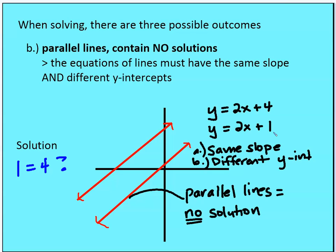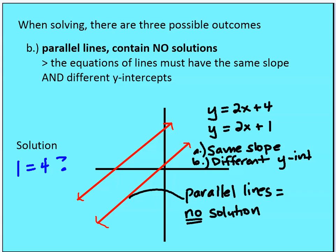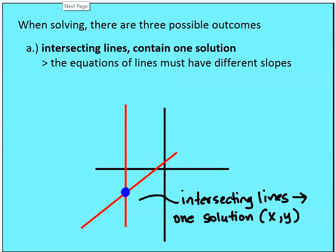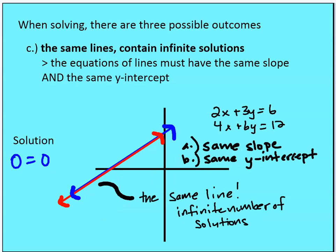When we solve through elimination and substitution, if you get a solution that doesn't make sense, that means you have no solution. So the first outcome is one solution where the lines intersect, the second is two parallel lines with the same slope and different y-intercepts — no solution — and the last possible outcome is you have two of the same lines, which contain an infinite number of solutions because they overlap.